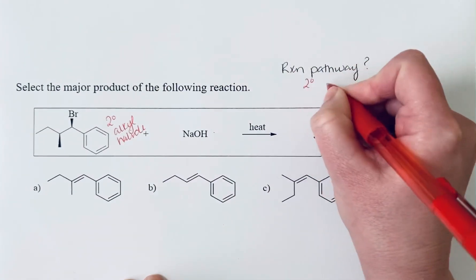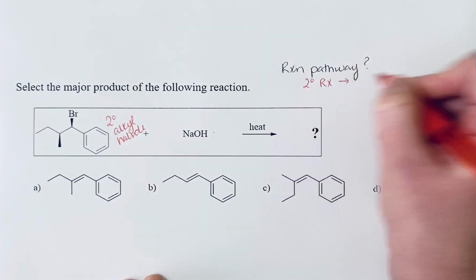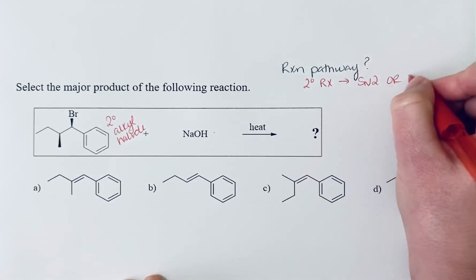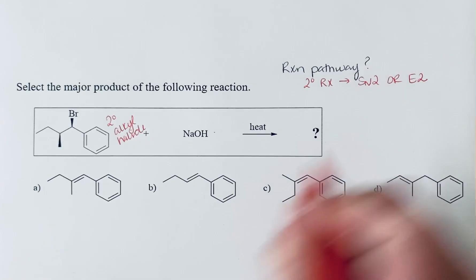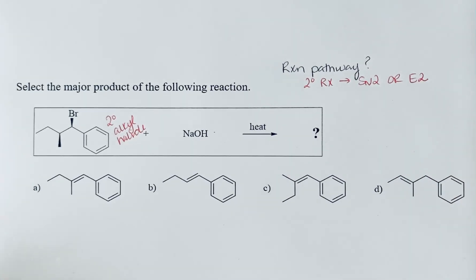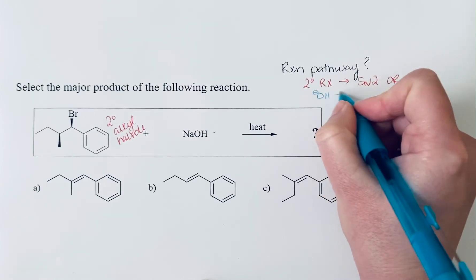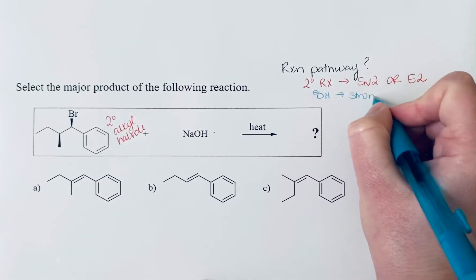So we have a secondary alkyl halide. Secondary alkyl halides tend to undergo either SN2 or E2 reactions. The next thing we want to look at is the nucleophile or base that we're using. We're using hydroxide and this is a strong small base.